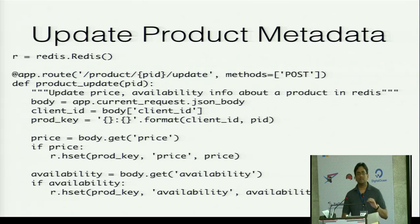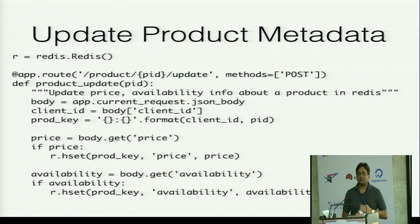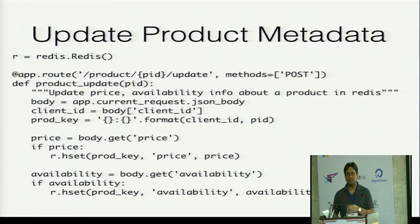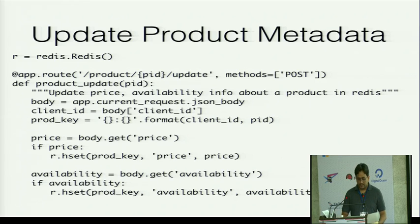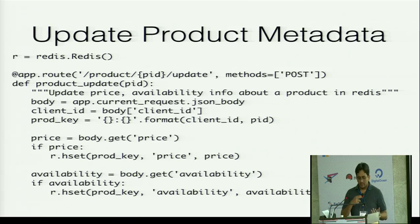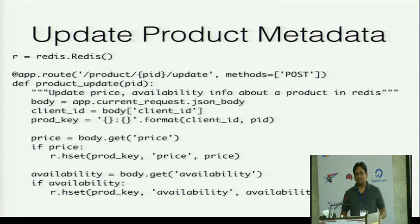We have a Redis instance as our data store and cache — all product metadata is stored there. I have a route slash product slash {PID} slash update that accepts a POST request. The function takes whatever is posted in json_body as the body. The client gives a client ID. The product key is formed as client_id colon product_id — for example, '3:123'. I form this product key and check if the body contains a price key and an availability key.